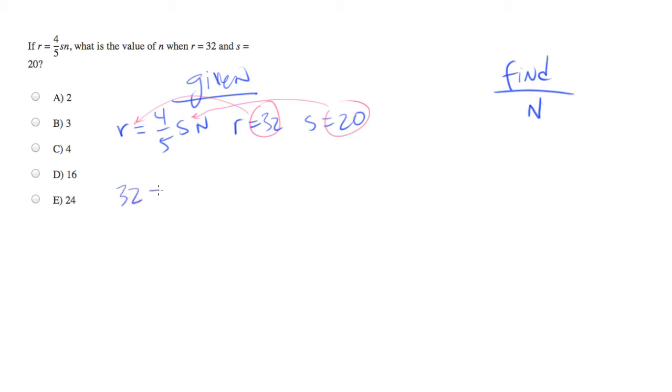32 equals four-fifths times 20 times n. At this point we're simply solving for n. So let's multiply both sides by five. Cancel that out. So now we have 5 times 32 equals 4 times 20 times n.